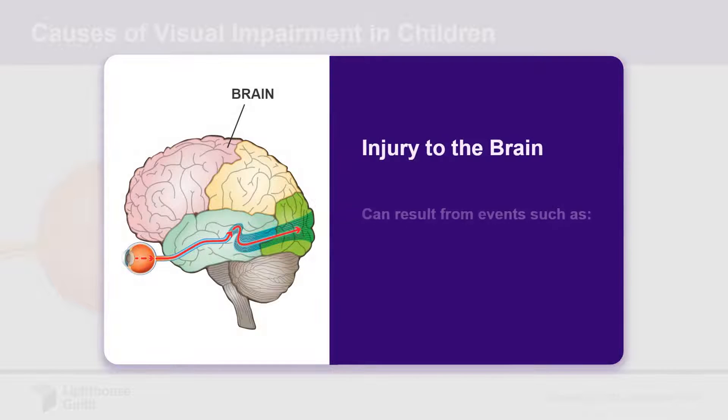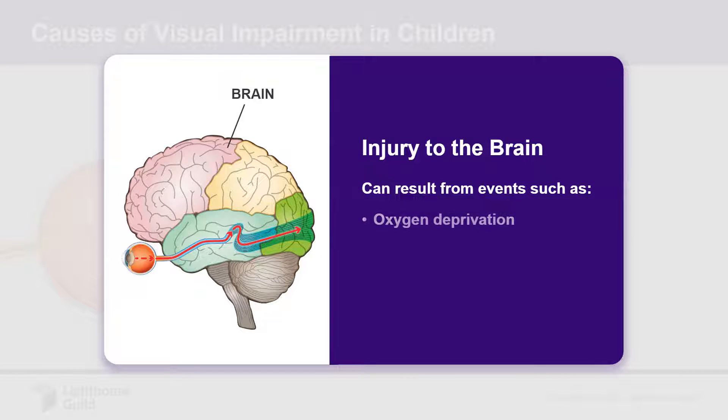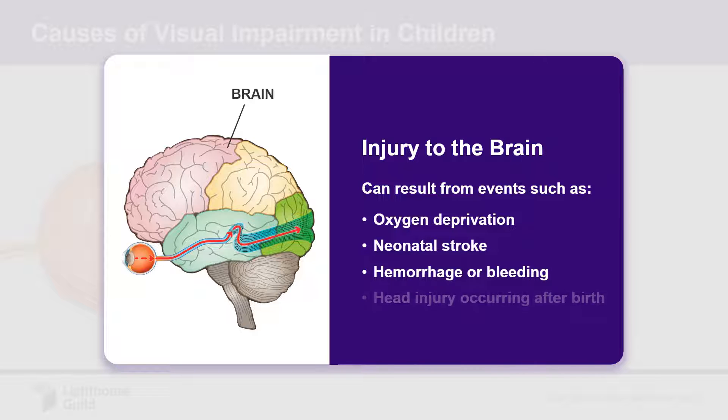Injury to the brain can result from events such as oxygen deprivation, neonatal stroke, hemorrhage or bleeding, or head injury occurring after birth.